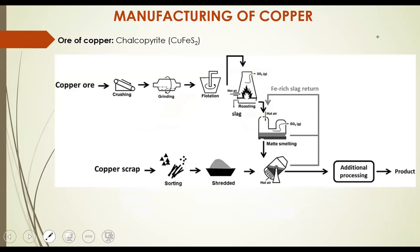We are discussing the manufacturing of copper and how copper is made. For every metal production we need to have ore of that metal. The ore of copper is chalcopyrite, which has the formula CuFeS2 — it contains CuS and FeS. There are four different processes used for the production of copper.